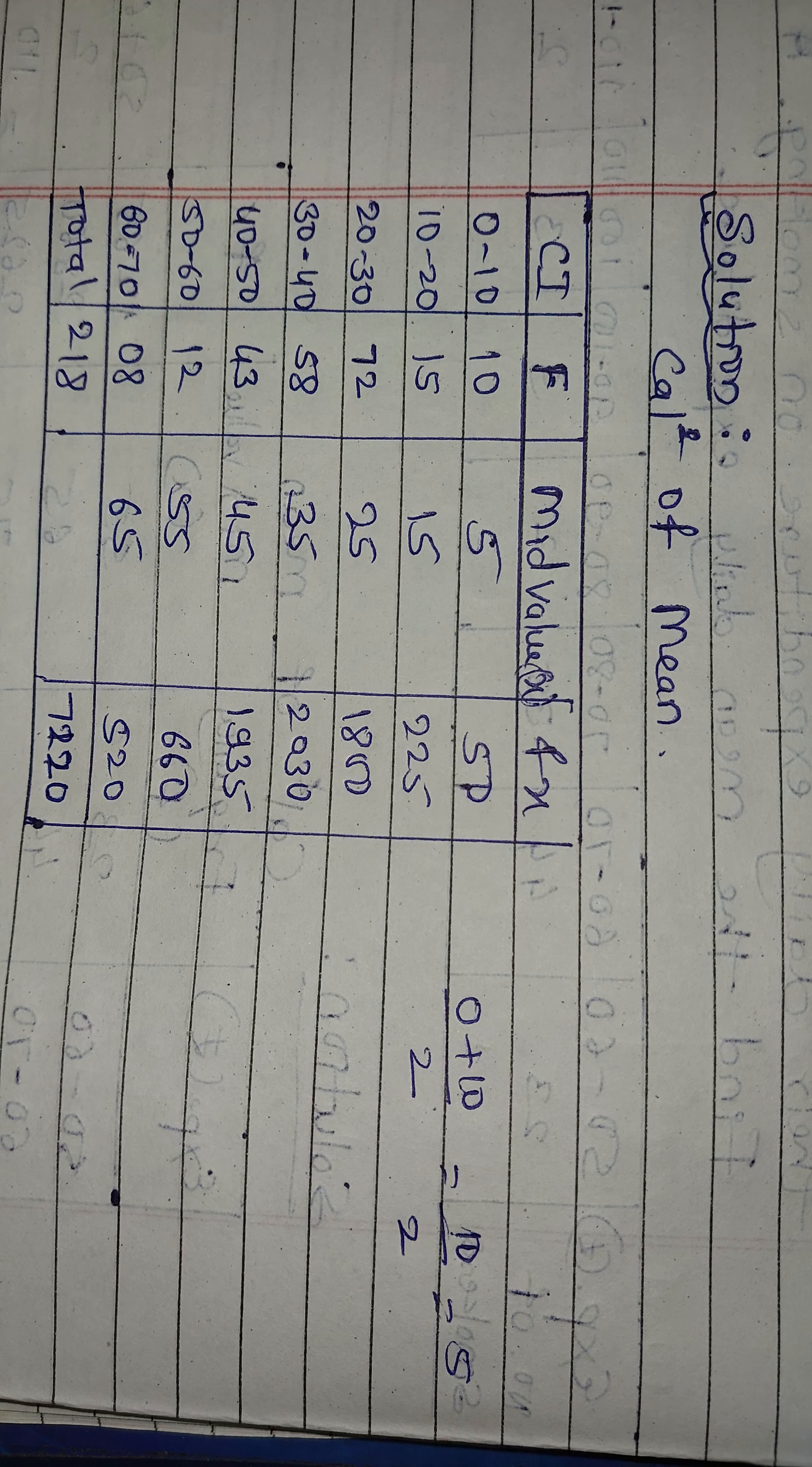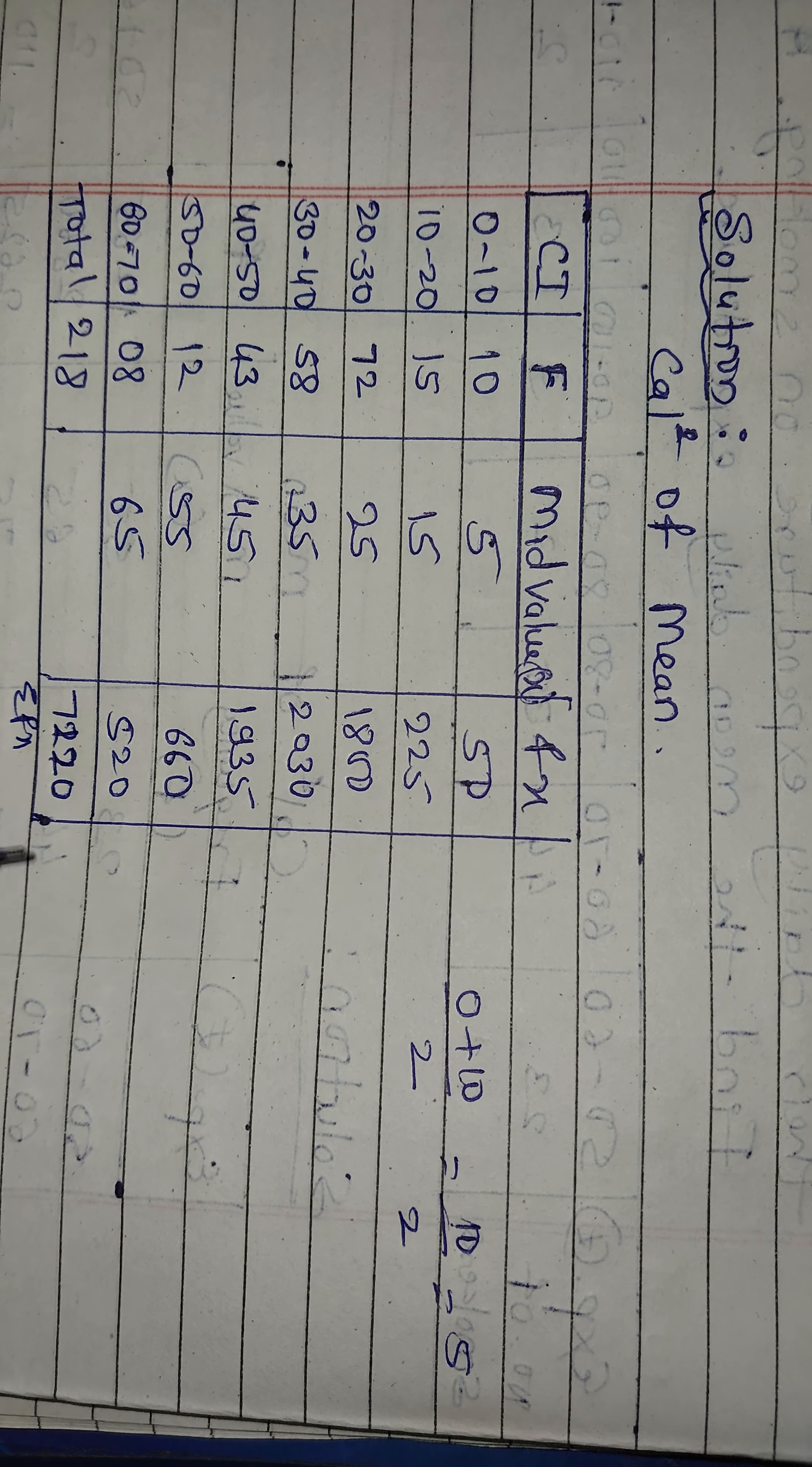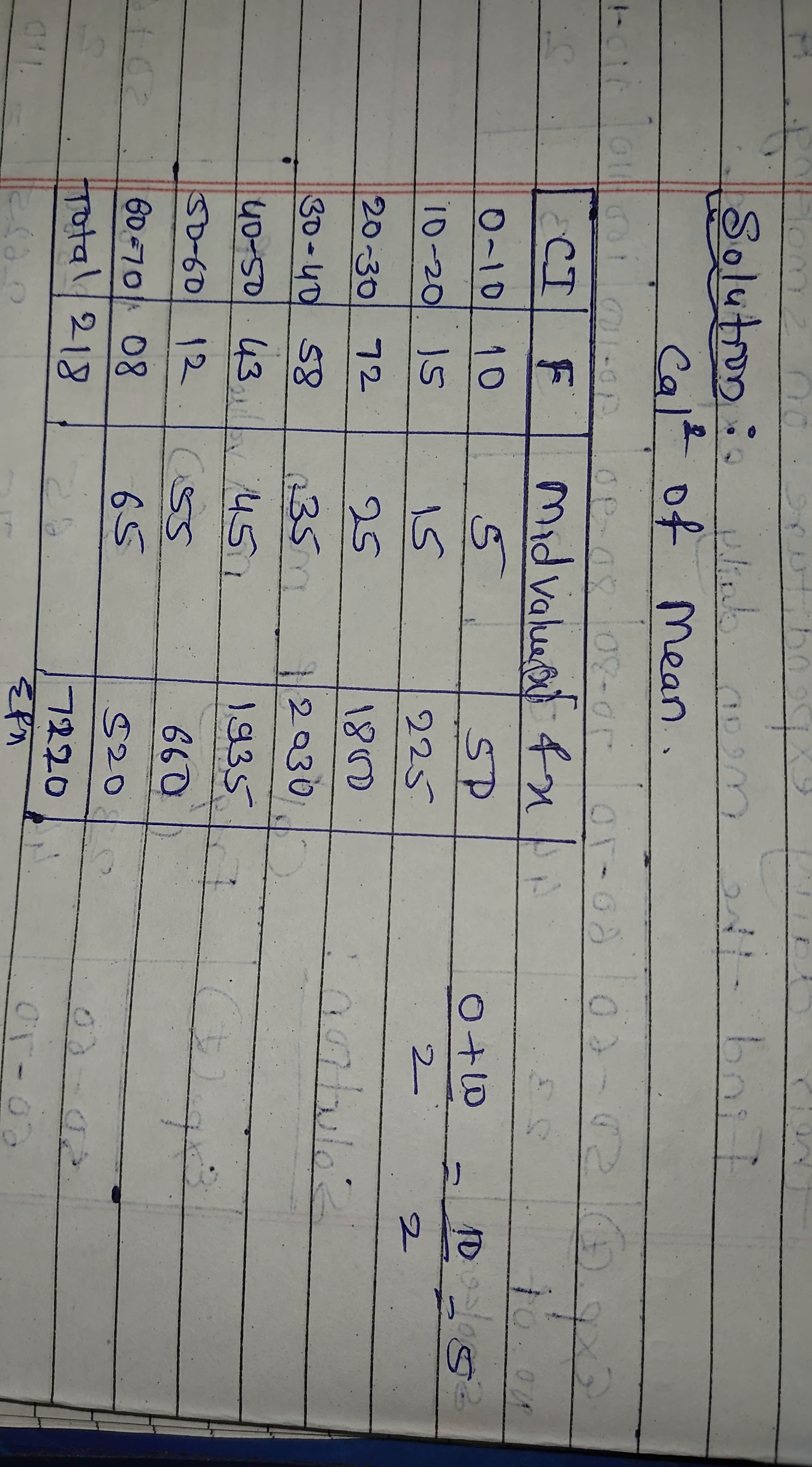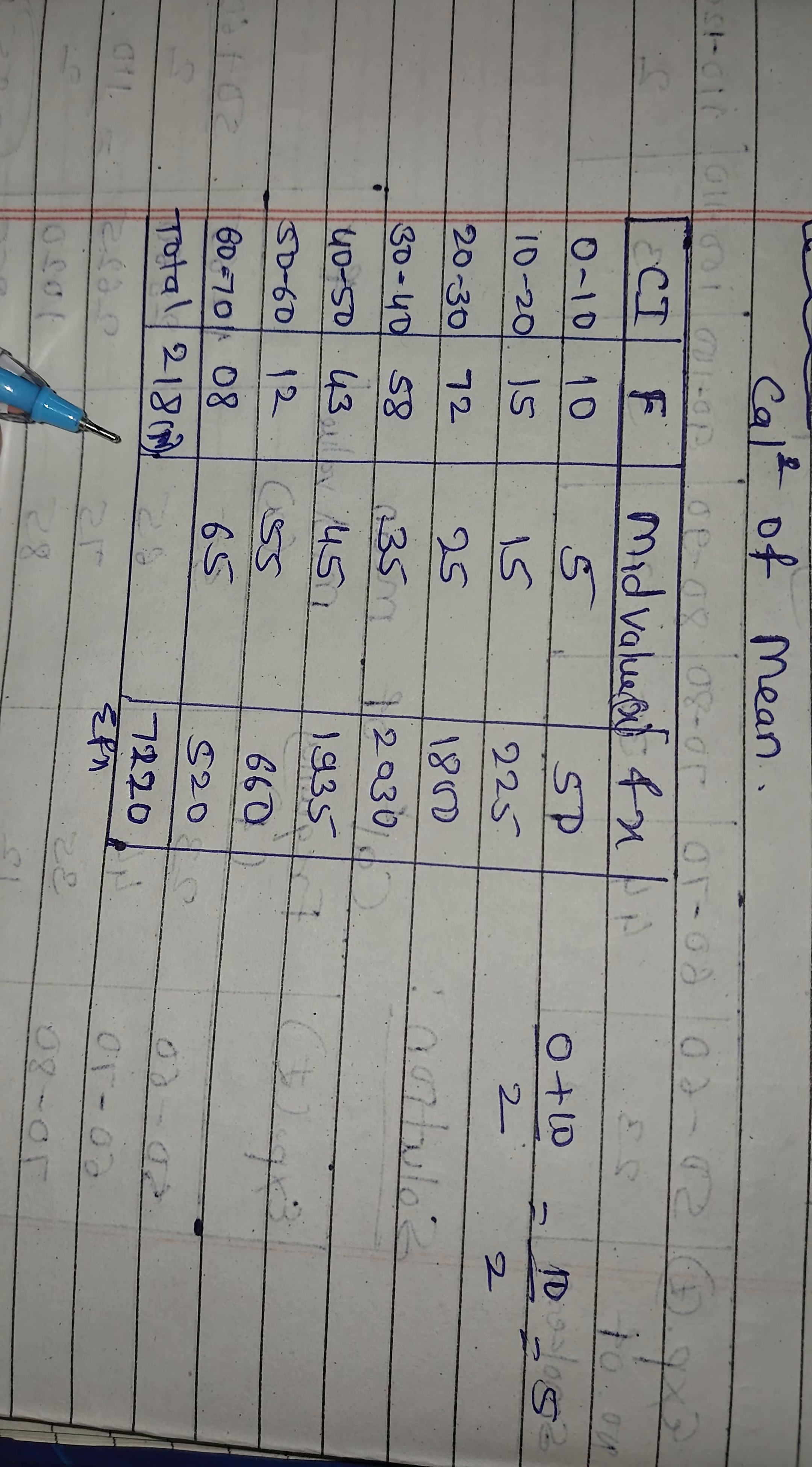The FX column calculated - the summation of FX total is 7220. F column total, we denote as N, is 218.